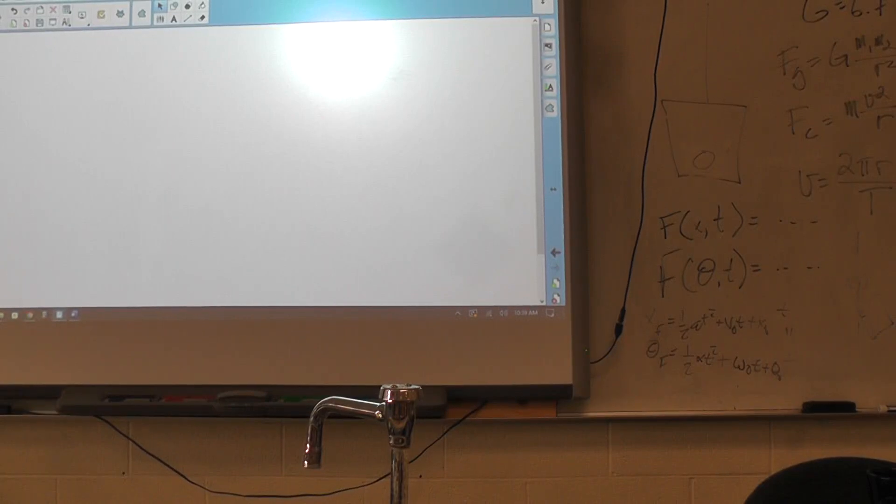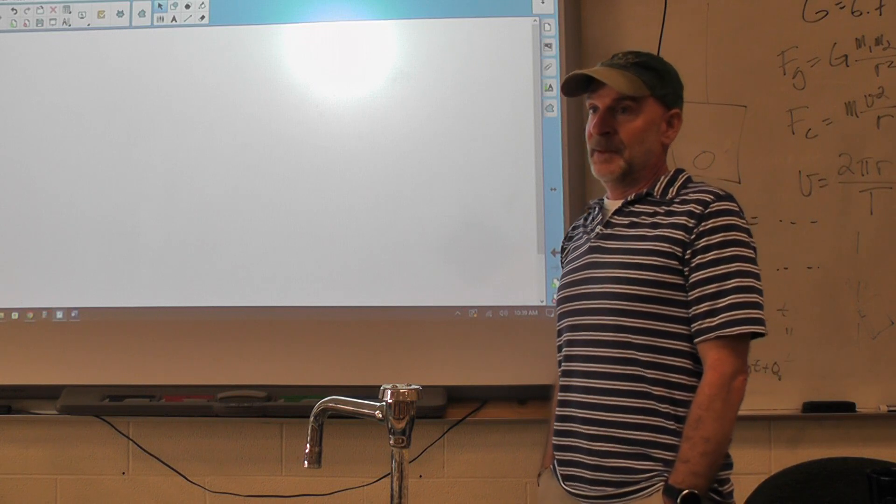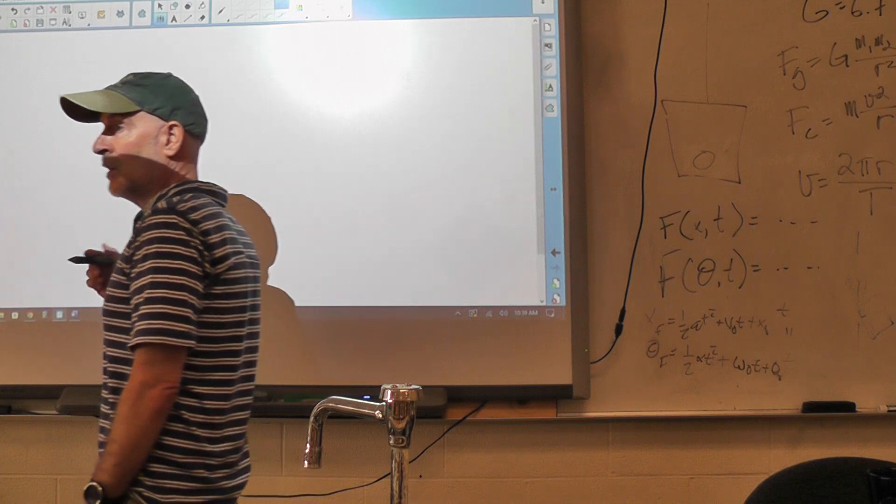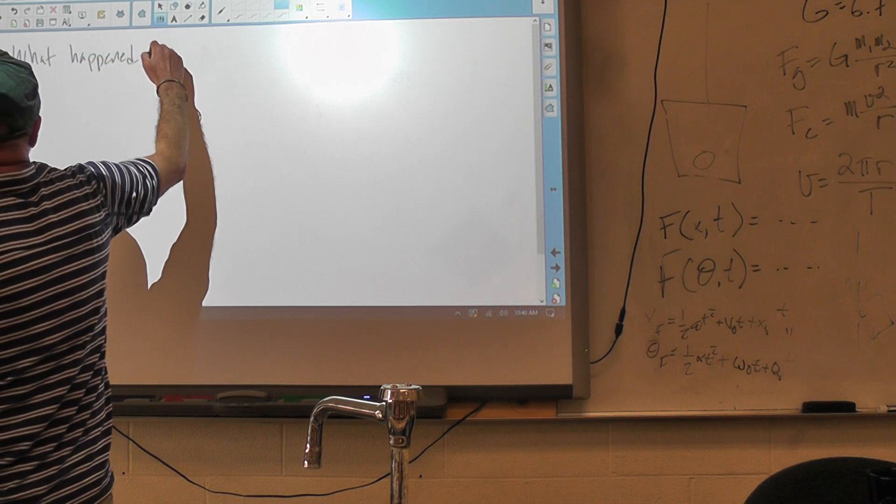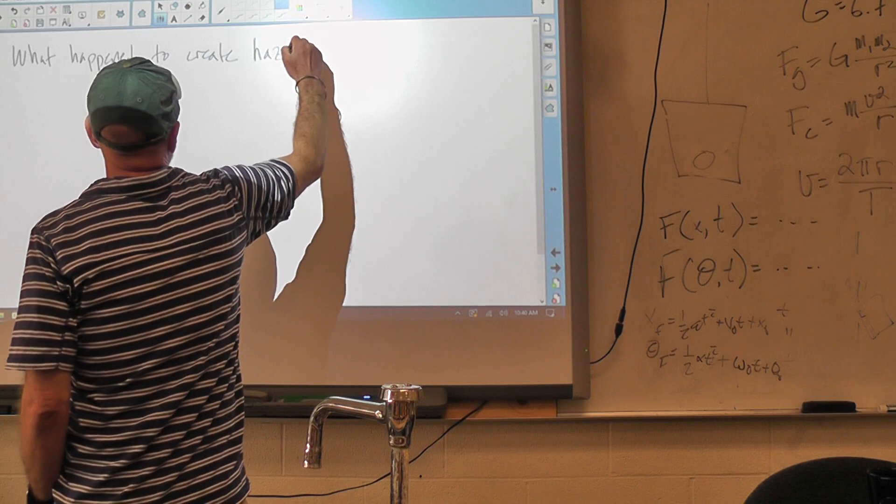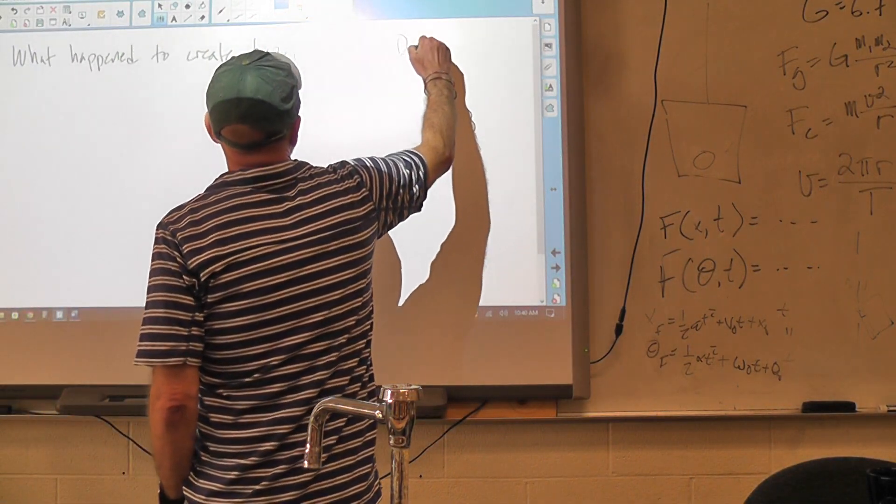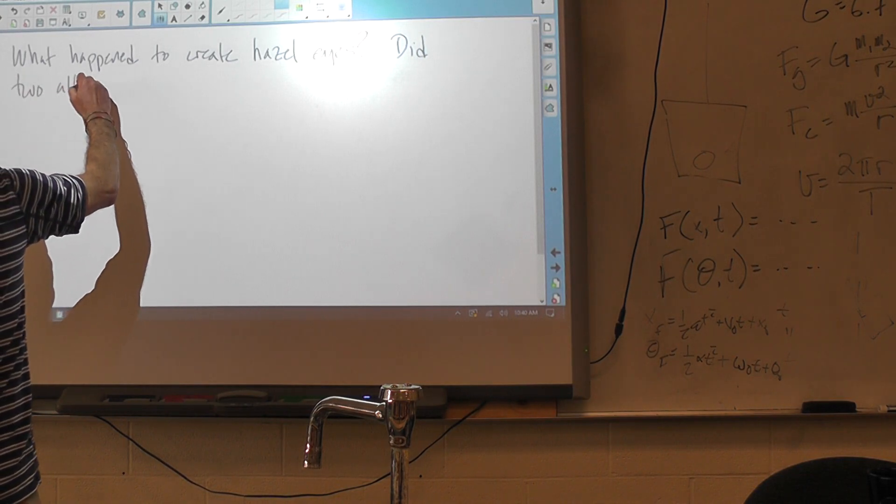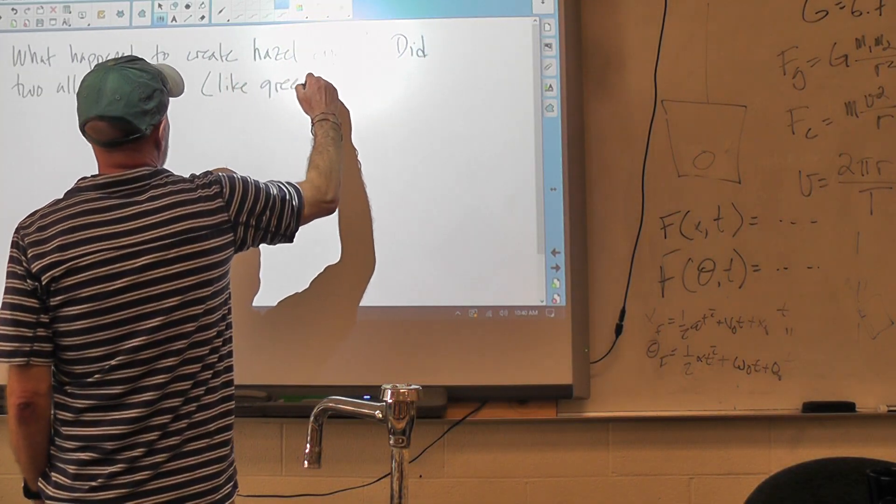I want to start—if you're comfortable, you sounded like you had a question that was intriguing. So what were you thinking? Pick the hardest one. Okay, so the question is: what happened to create hazel eyes? And that was the first part. Was the second part: did two alleles combine like green and brown?